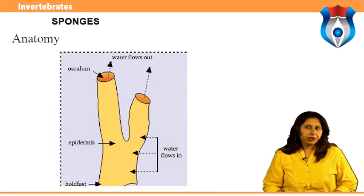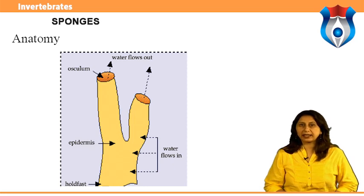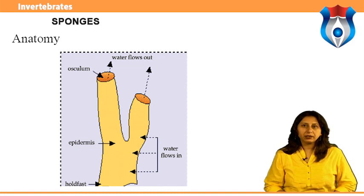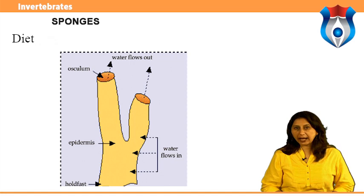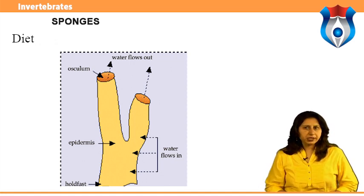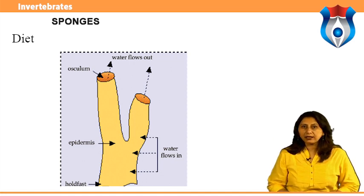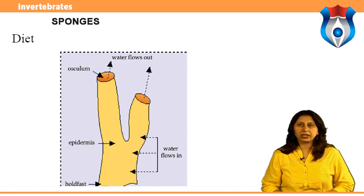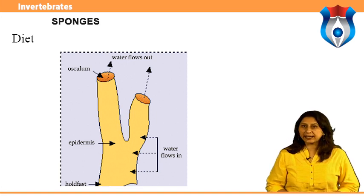Anatomy: the body of a sponge has two outer layers separated by an acellular gel layer called the mesophyll, also called the mesenchyme. Diet: sponges are filter feeders. Most sponges eat tiny floating organic particles and plankton that they filter from the water flowing through their body. Food is collected in specialized cells called choanocytes.